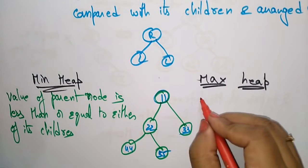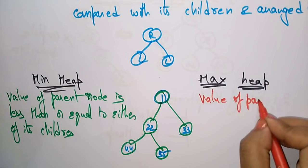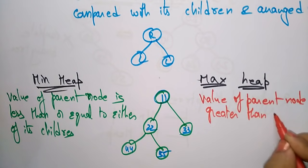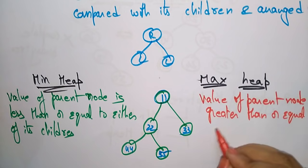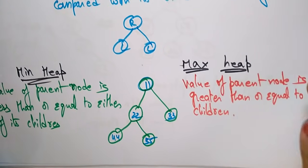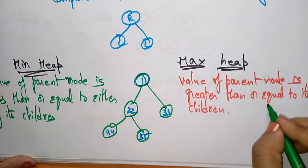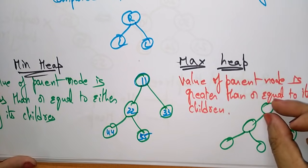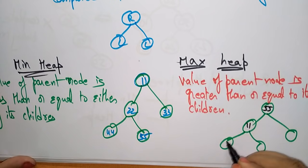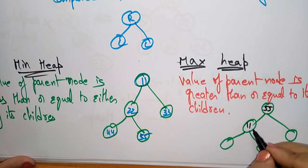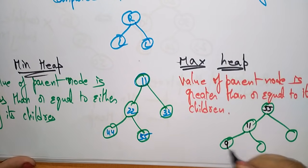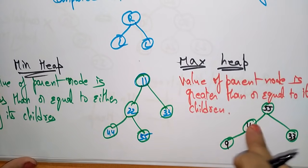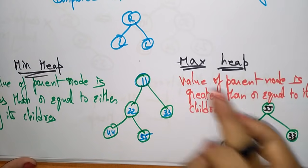In a max heap, the value of the parent node is greater than or equal to its children. For example, take 55 as the parent. The parent should be greater — say 55, 11, and children 9, 8, 33. For these two children, this is the parent and the parent should be greater. That is a max heap.